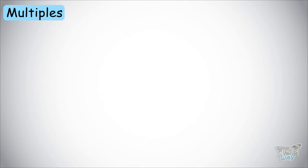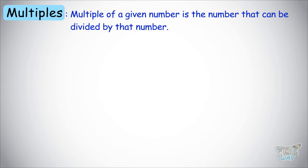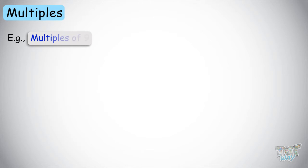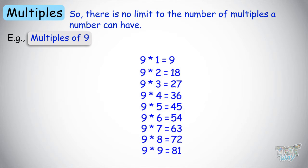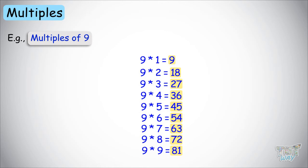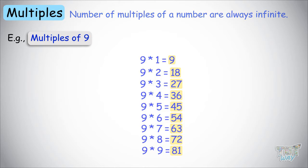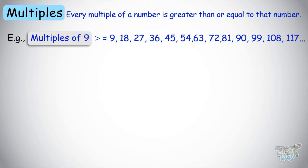Now let's learn about multiples. Multiples of a given number is the number that can be divided by that number. For example, the multiples of 9 start at 9 itself, because 9 times 1 is 9. Then 9 times 2 is 18, 9 times 3 is 27, 9 times 4 is 36, 9 times 5 is 45, 9 times 6 is 54. There is no limit to the number of multiples, so multiples of a number are always infinite. And every multiple is greater than or equal to the given number.